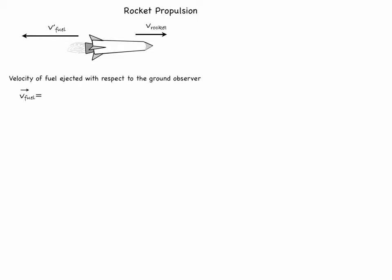The fuel participates in two motions: one forward due to the rocket and one backwards due to the ejection. So its velocity can be written as the sum of the two velocities, that of the rocket forward and that of the fuel being ejected.